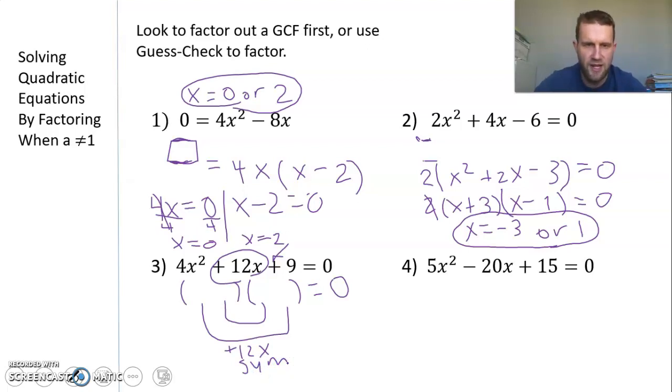The sign in front of 9 is plus, so I need a sum of positive 12x. If you notice, the a and c values—the 4 and 9—are both perfect squares. Sometimes with these examples, we want to start with their roots first. Square root of 4 is 2, and square root of 9 is 3. I would start with 2x and 2x for the first terms, and 3 and 3 for the last terms.